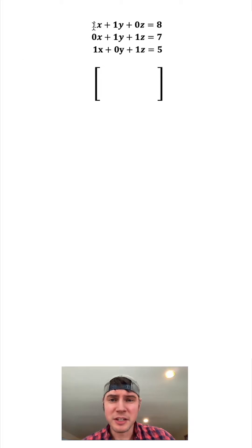So I want to rewrite this in a matrix. I'm going to take the coefficients 1, 1, 0, 8 and put it in the top row. Same thing here: 0, 1, 1, 7, and for here: 1, 0, 1, 5.